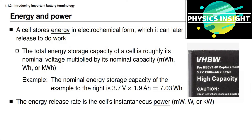Energy and power are different things. Power is the rate at which we release energy from a battery cell — the rate at which energy is used — and is measured in milliwatts, watts, or kilowatts.